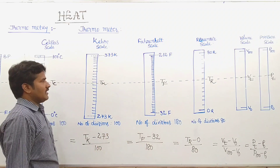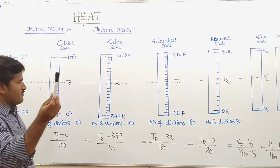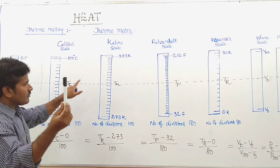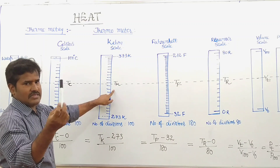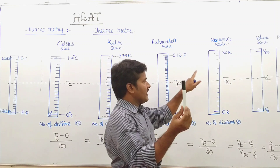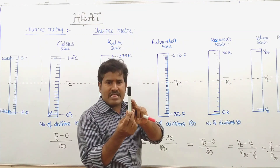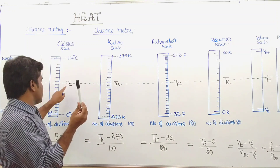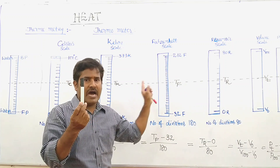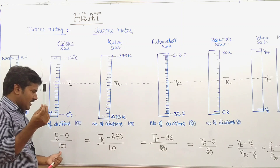To find at what temperature Celsius and Fahrenheit scales give the same reading: using the relation (Tc − 0)/100 = (Tf − 32)/180, and setting Tc = Tf = X, we write X/100 = (X − 32)/180.